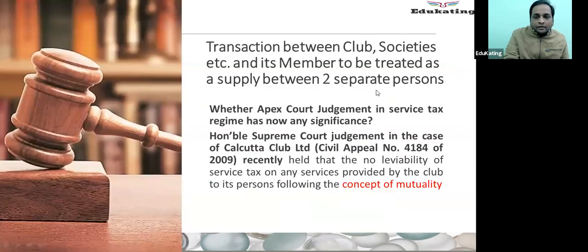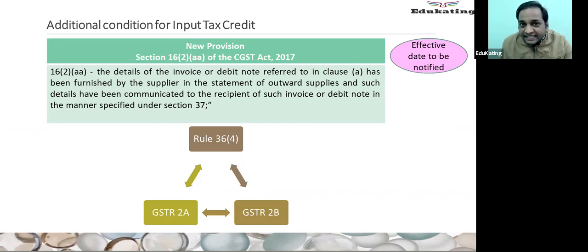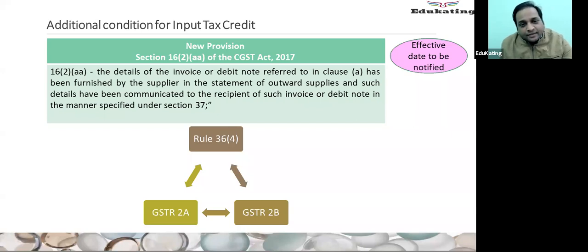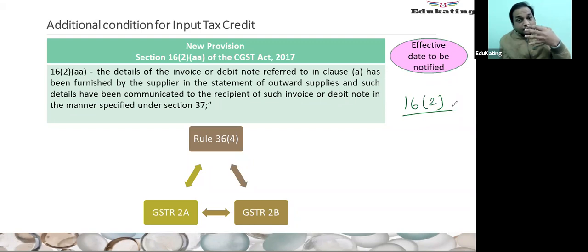This is the first amendment. Now coming to the second amendment, which is related to input tax credit — again an important one. A new clause has been inserted. Section 16, Subsection 2 talks about the four conditions for taking input tax credit.